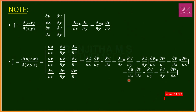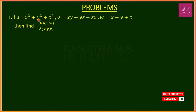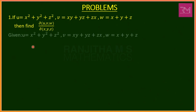Next, we shall study some important problems on Jacobians. Here is the first problem: if u = x² + y² + z², v = xy + yz + zx, w = x + y + z, then find del(u,v,w)/del(x,y,z), that is, find the Jacobian for the functions u, v, w with respect to the three independent variables x, y, z.